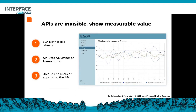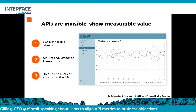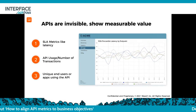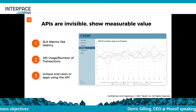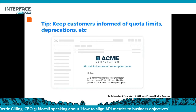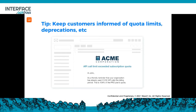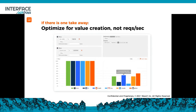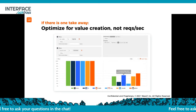Another way to help real retention is showing business value directly to your end users. Just because a developer who's integrating your API sees value doesn't mean their business users do. One way to do this is through embedded dashboards showing engagement metrics, usage metrics, and transaction volume, so they understand what they're purchasing — otherwise the API can look like a black box to a business user. One last tip: keep customers informed about what's happening with the API — quota limits, deprecations. You need to understand your API as a product lifecycle from start to end. Don't surprise your developers or customers. If there's one takeaway: optimize for value creation and measure that value, rather than just requests per second or errors per minute.